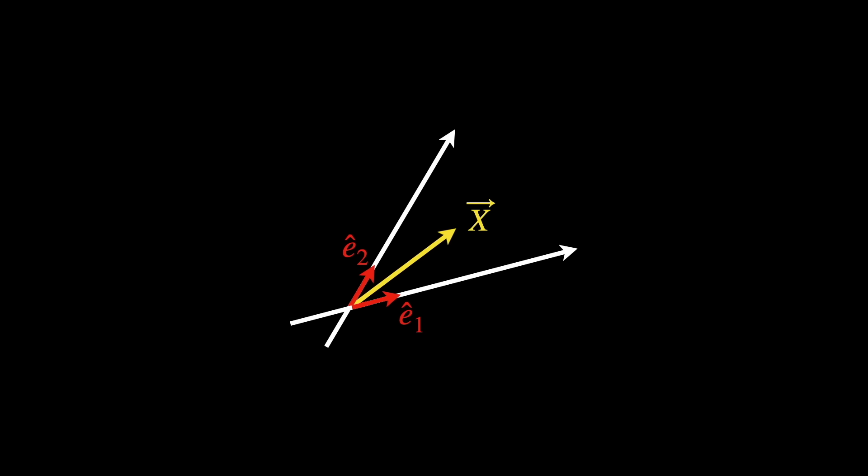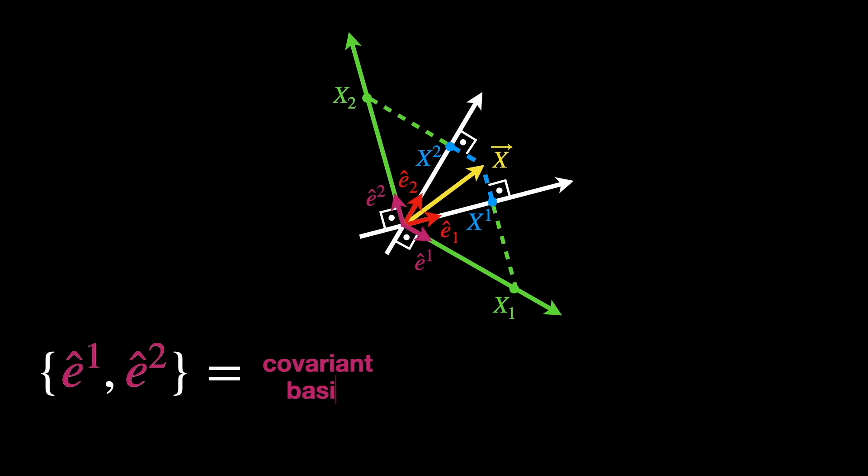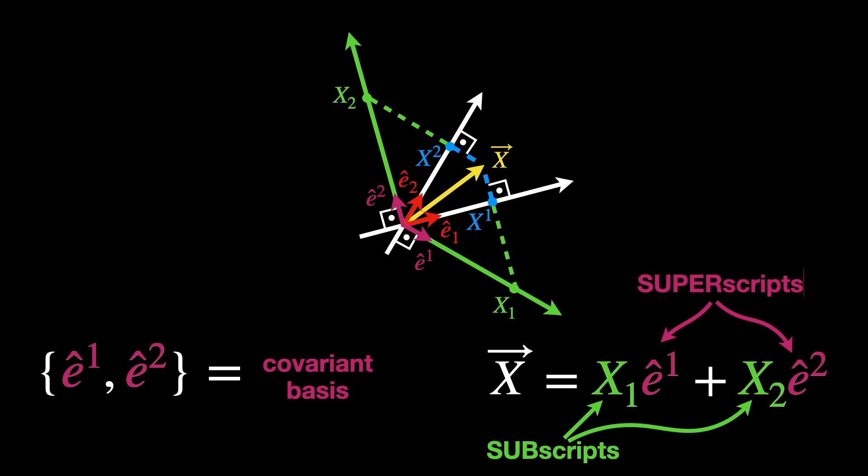Now its dual basis, defined by perpendicular projections on the original basis axis, can also represent the vector x by parallel projections on its own basis axis. These are denoted as ê¹ and ê² superscripts. This is called the covariant basis, and the vector components are real numbers denoted as x₁ and x₂ with subscripts.